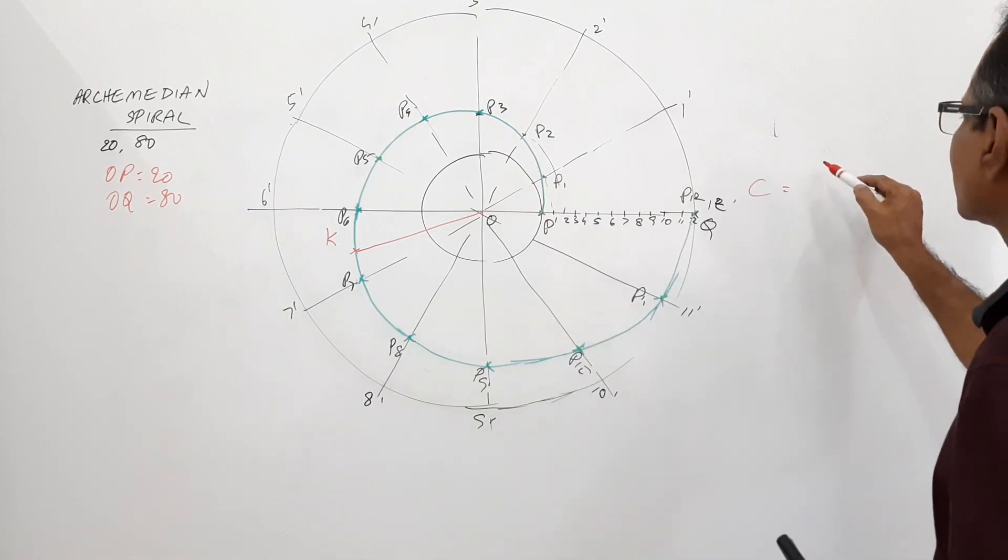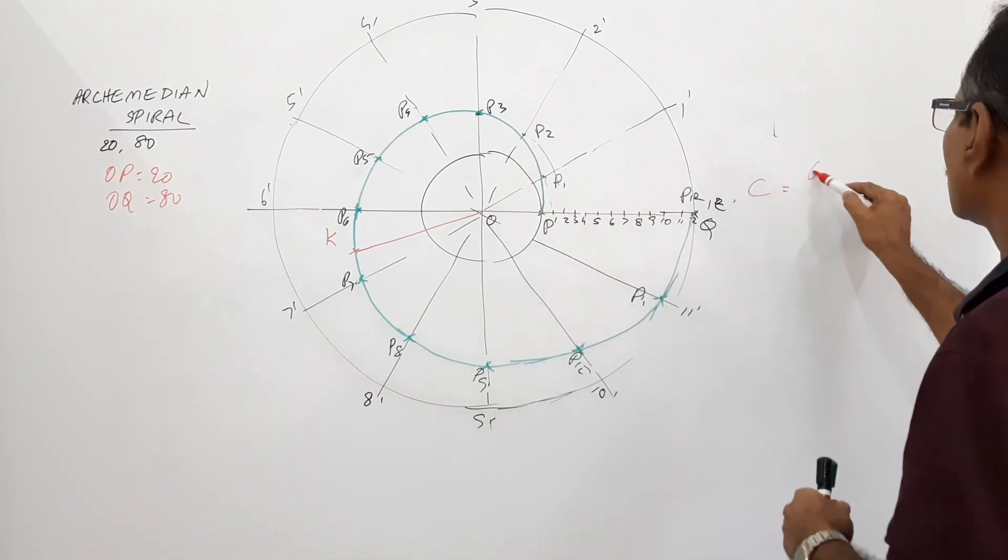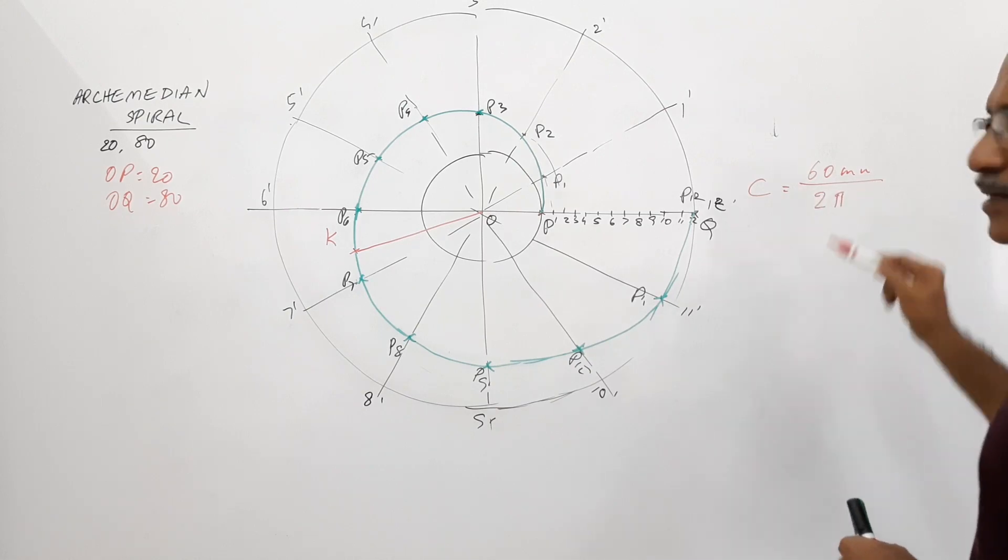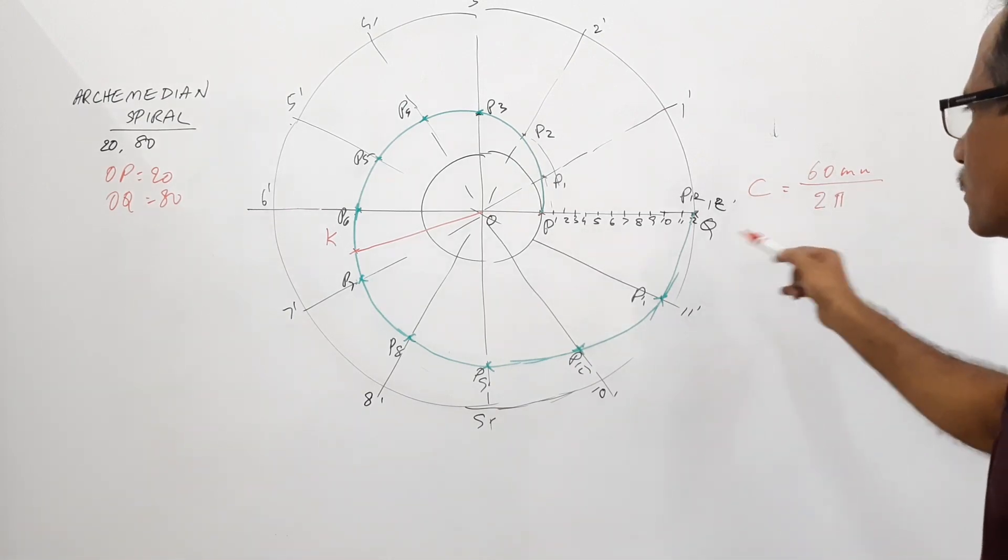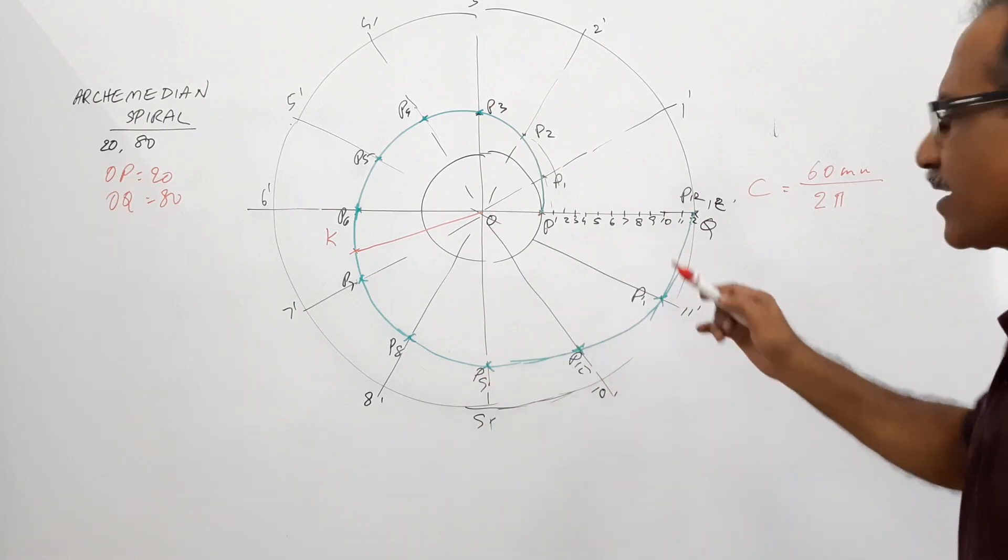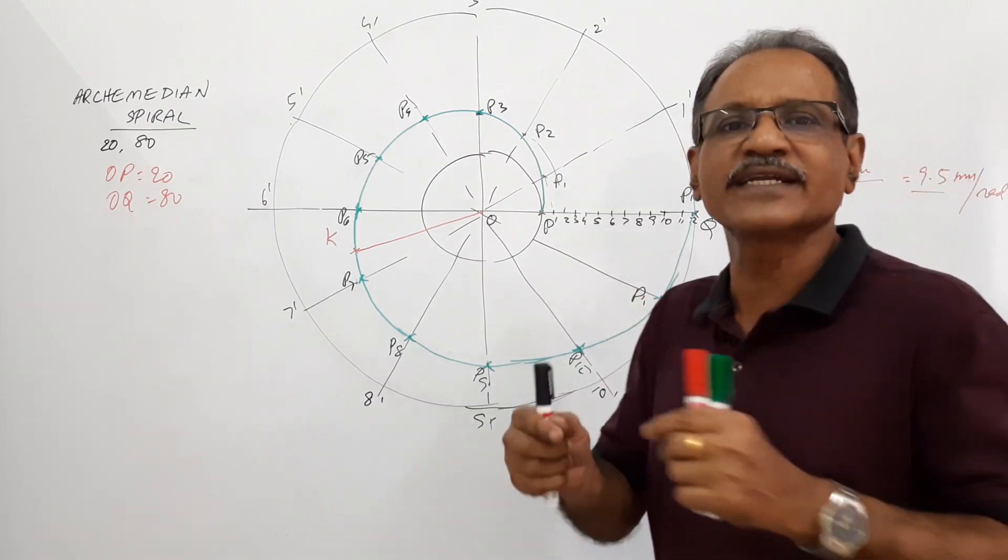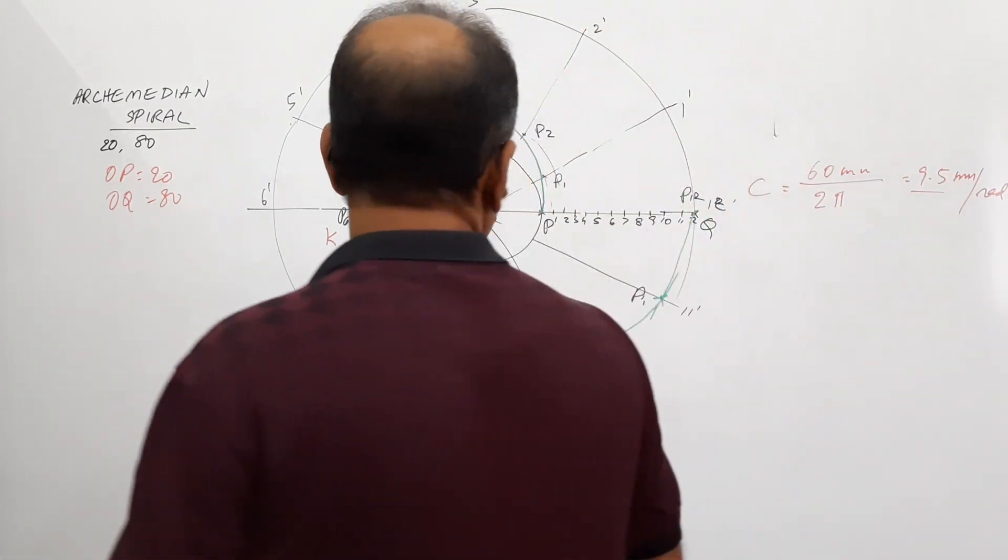What is the radial distance traveled in 360 degrees? In 360 degrees, it travels 80 minus 20 equal to 60 mm divided by 2 pi, right? Angle 360 degrees is 2 pi. You will get this as 9.5 mm per radian. That is in an angle of 1 radian it travels 9.5 mm.